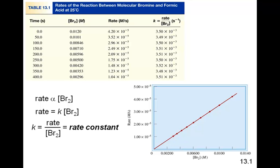Since the rate is directly related to the concentration of bromine, the constant K is necessary to equate concentration and rate. The rate can be calculated at any bromine concentration if we know K, or we can calculate the bromine concentration if we know the rate and K. In this case, K is approximately 3.50 × 10⁻³, with units of reciprocal seconds (s⁻¹), because the molarity units in rate and concentration cancel.